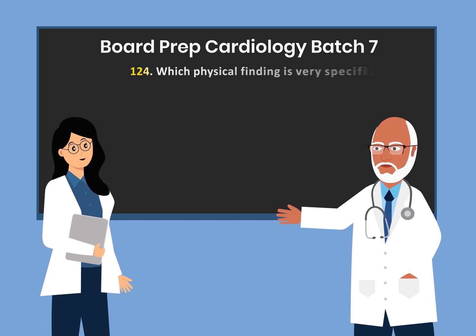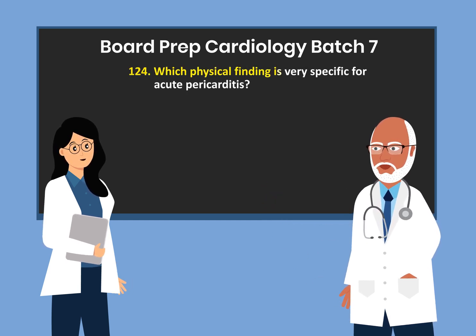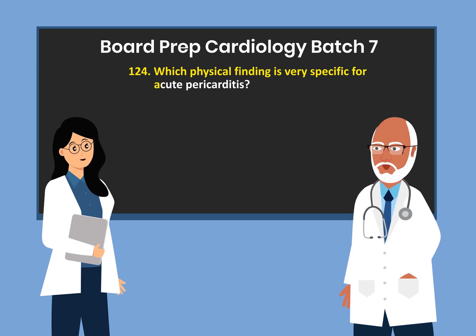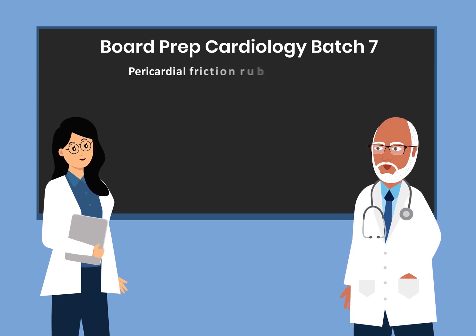Question 124. Which physical finding is very specific for acute pericarditis? Pericardial friction rub.